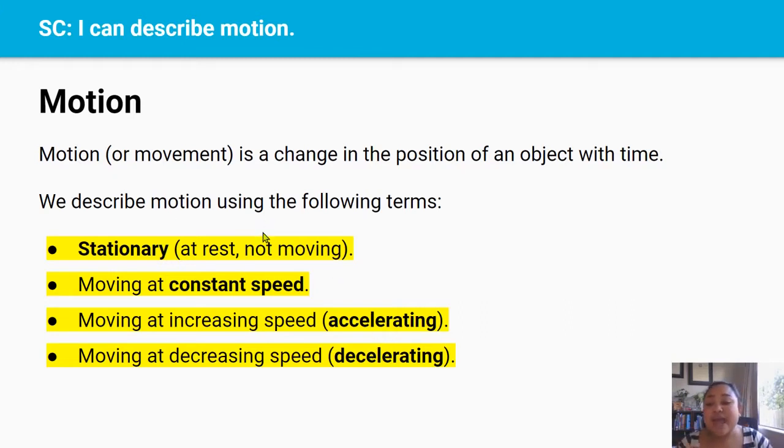And we can describe motion as moving at a decreasing speed or decelerating. So let's say I was approaching a stoplight and I have to put my brakes on. I have to decrease my speed, I have to decelerate or else I'm gonna crash into the fancy car in front of me.